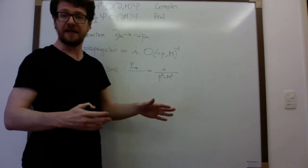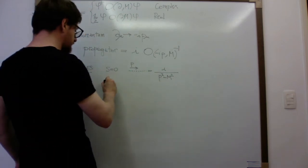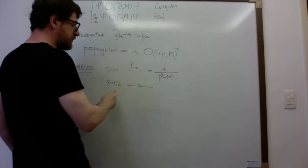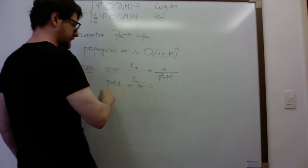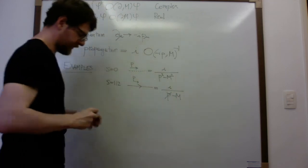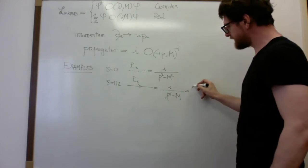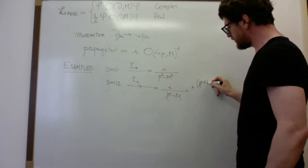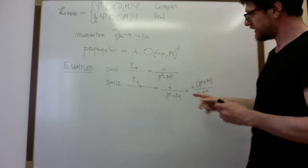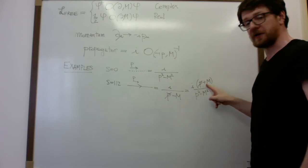Let me give examples. For the scalar field, we use dashed lines, and the propagator with momentum p is i over (p^2 minus m^2). There would also be a plus i-epsilon term, the so-called Feynman prescription, but I won't write it right now. For spin-1/2 fermions, we use continuous lines, and the propagator is i divided by (p-slash minus m), which using properties of gamma matrices equals i(p-slash plus m) divided by (p^2 minus m^2) — very similar to the scalar but with a spinor structure in the numerator.